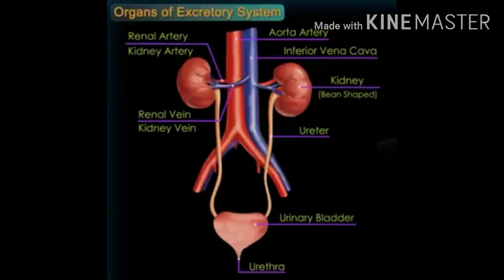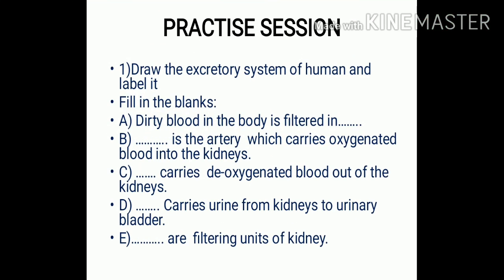So I hope you have understood the excretory system of humans — the structure of it, various parts of it, and the physical process of urine formation and filtration. In my next video I shall discuss the detailed structure of the kidney and how the filtering unit of the kidney, the nephrons, work. Before that, here is a small practice session — solve these questions so that you are able to understand how much you have learned. Till then, happy learning, enjoy learning.